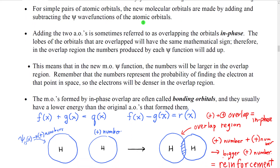For simple pairs of atomic orbitals, the new molecular orbitals can be made by just adding and subtracting the wave functions of the atomic orbitals. Adding the two atomic orbitals is sometimes referred to as overlapping the orbitals in phase — because the orbitals basically define waves, and when the lobes of the orbital are aligned in the same phase, we call that in-phase, as we do in wave physics.